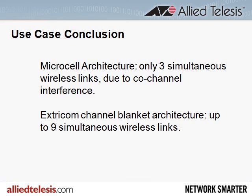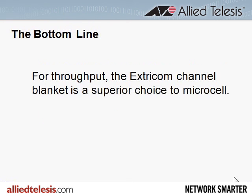To sum up: with the standard microcell architecture, even though we deployed nine cells in our use case, we found ourselves with only three channels of wireless LAN capacity, or less, due to co-channel interference. With the Extracom solution, the opposite is true. Even in the 2.4GHz band, the channel blanket architecture effectively provides up to nine channels of capacity, and in addition, each of those channels provides several more times the throughput due to segregation of legacy users. So the Extracom channel blanket eliminates the severe throughput problems of the microcell architecture and provides the kind of bandwidth that the school in our use case was looking for. If throughput is important to you, you should be taking a very close look at the channel blanket architecture — when it comes to throughput, the channel blanket simply works better than the standard microcell architecture.